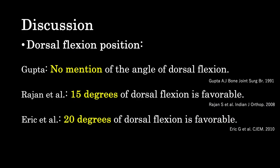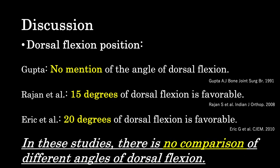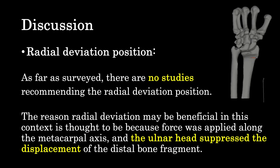In discussion, Gupta made no mention of the angle of dorsal flexion. Rajan et al. found 15 degrees of dorsal flexion to be favorable, and Eric et al. suggested 20 degrees of dorsal flexion. However, in these studies there is no comparison of different angles of dorsal flexion. As far as surveyed, there were no studies recommending a radial deviation position. The reason radial deviation may be beneficial is thought to be because force was directed along the metacarpal axis and the ulnar head suppressed the displacement of the distal bone fragment.